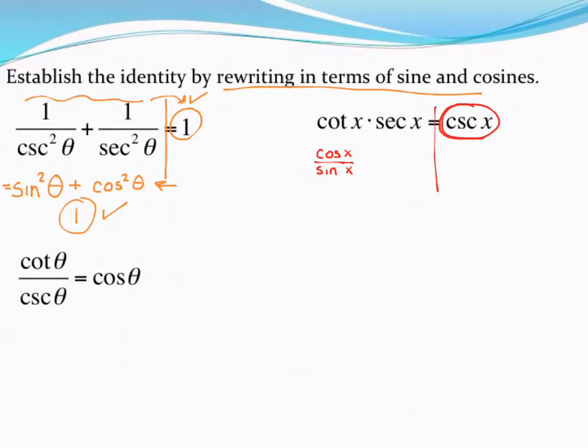But it's not going to get us as far as this is going to get us. So sometimes you may do something right, but it's going to be sort of a dead end for you. So if you get a dead end, try something else. Secant is the same thing as 1 over cosine, so I'll rewrite that piece.